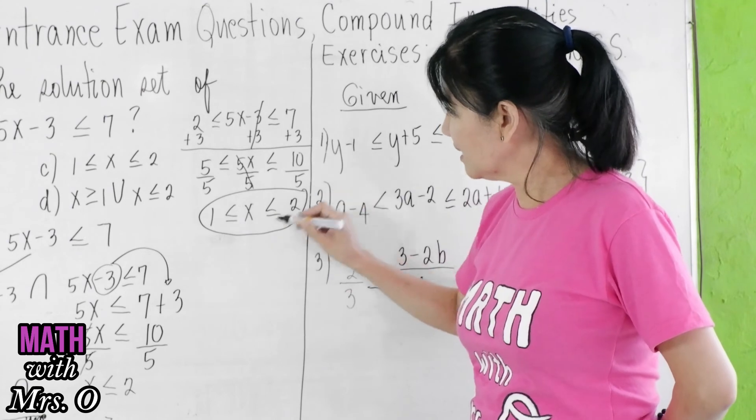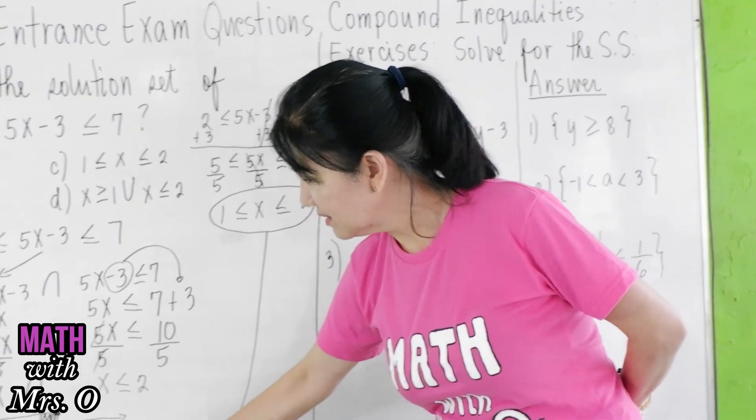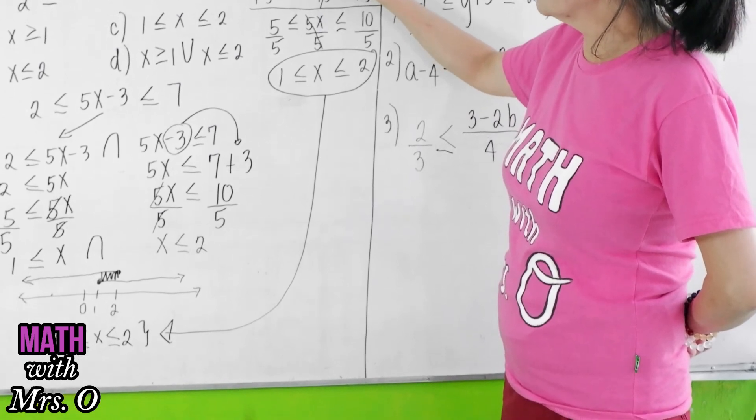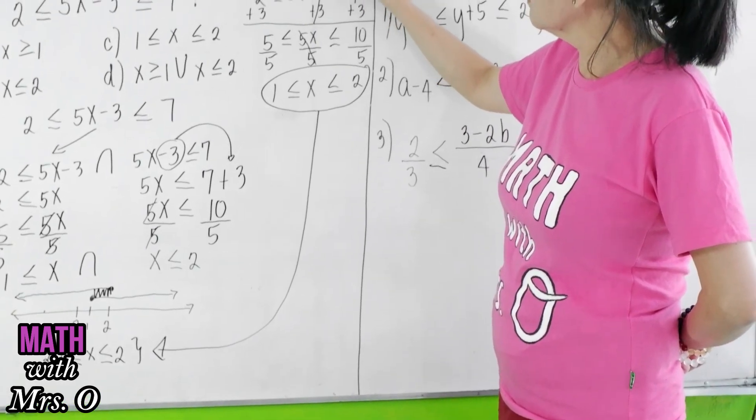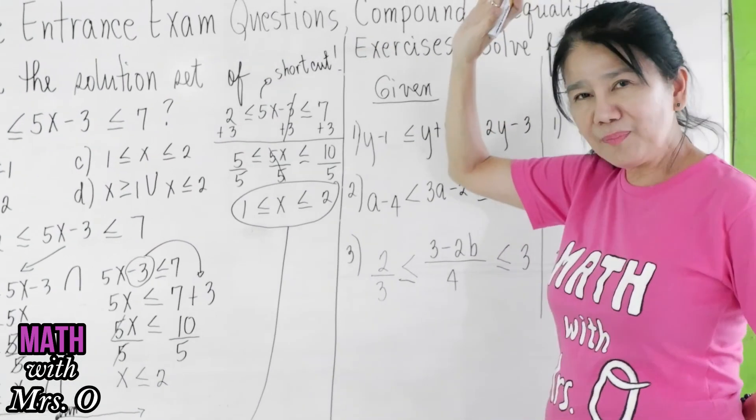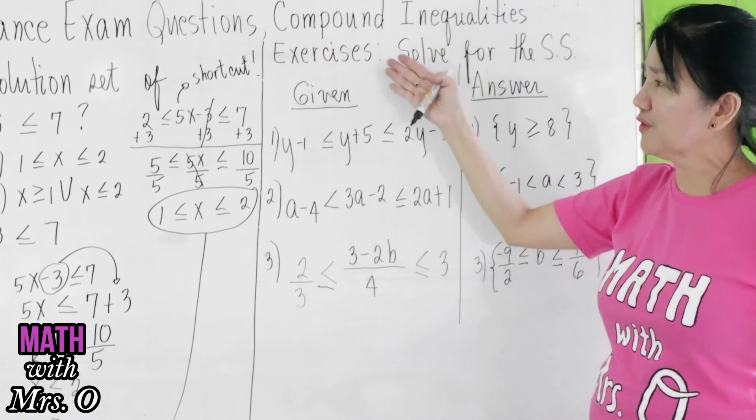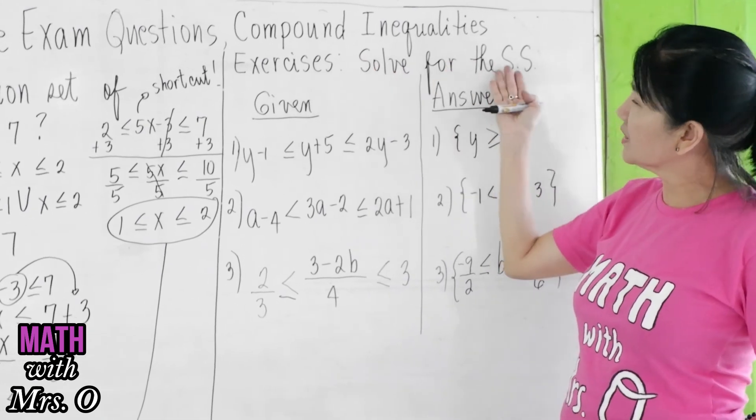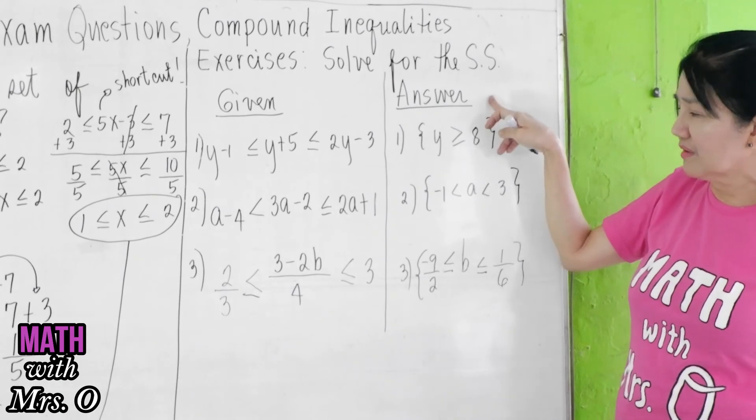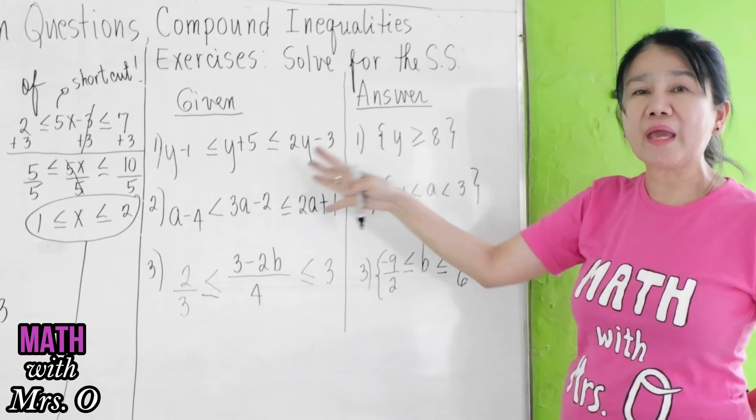You can see now that your answer here is equal to your answer there. So we can call this the short method or the shortcut method. So I prepared here some exercises for you. You solve for the solution set. I already gave you the answers on the right side so that you can compare.